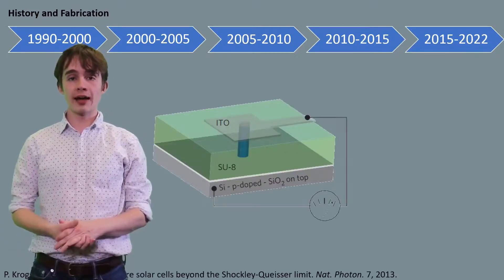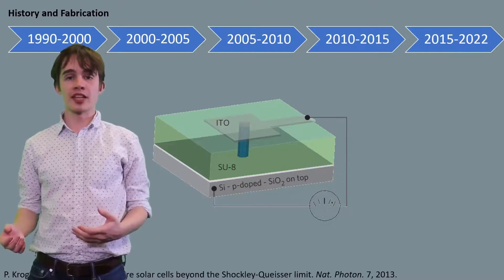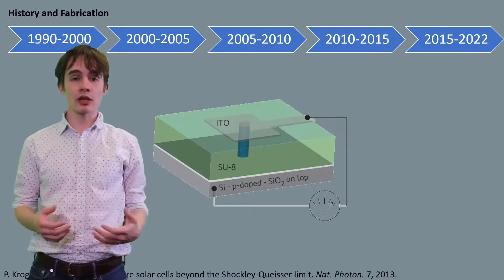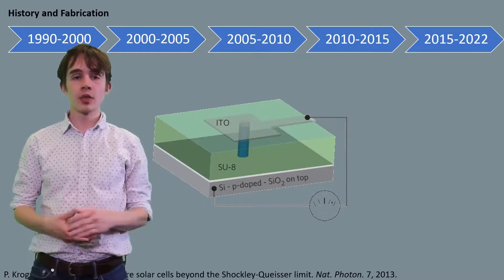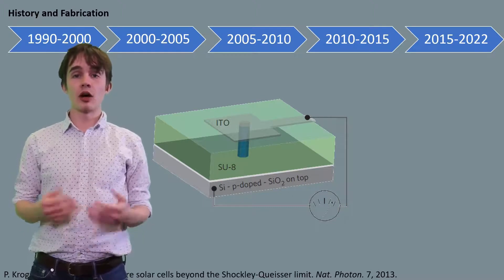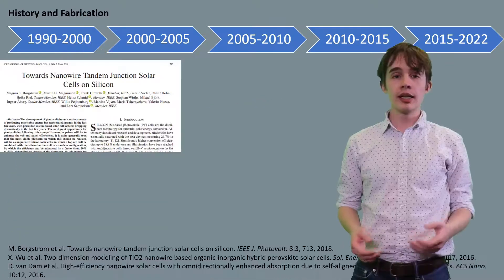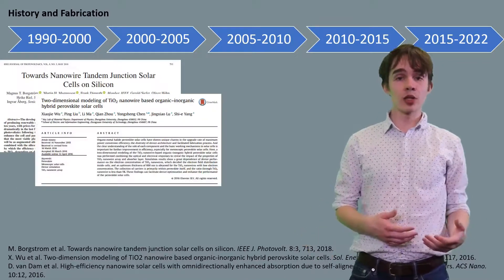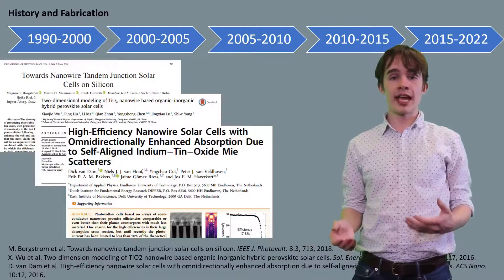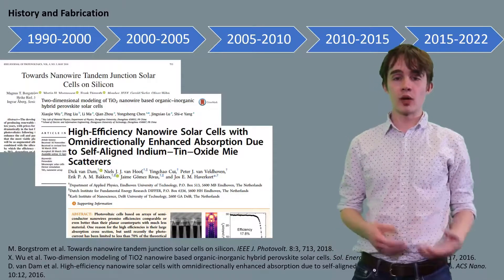While they're not currently practical for large-scale power generation, single nanowire solar cells have been demonstrated exceeding the Shockley-Queisser limit at efficiencies over 40%. More promising for immediate implementation are research trends in other adaptations of the nanowire geometry. Tandem junction nanowire solar cells, organic-inorganic hybrid cells, and nanowire cells enhanced with scatterers have all demonstrated efficiencies between 15% and 20%.